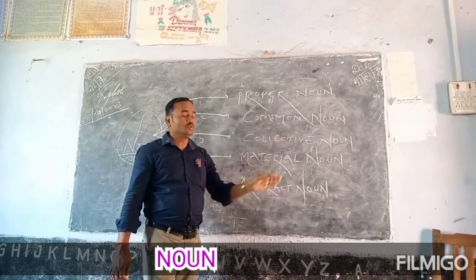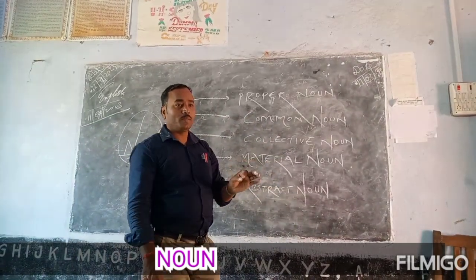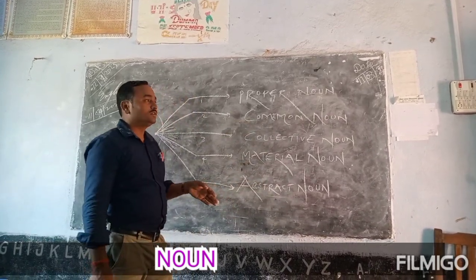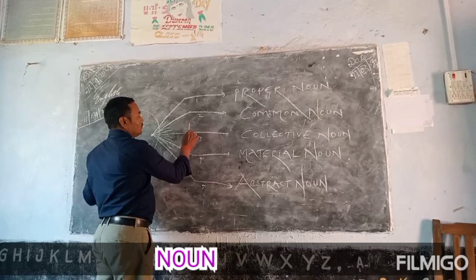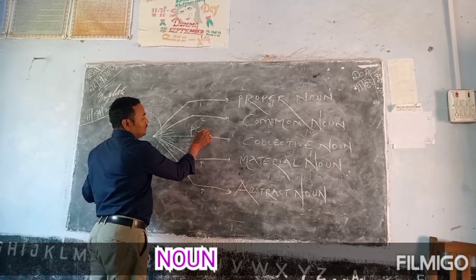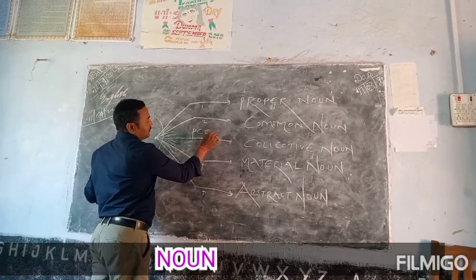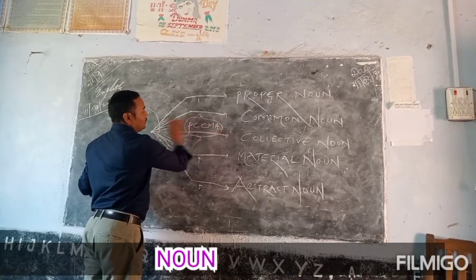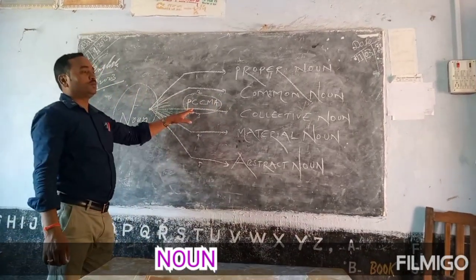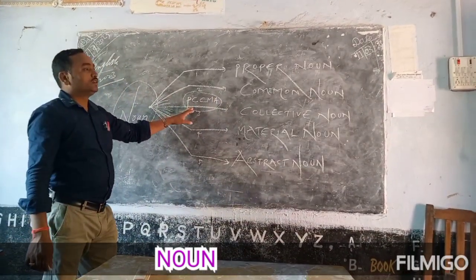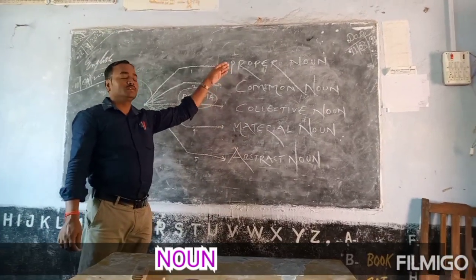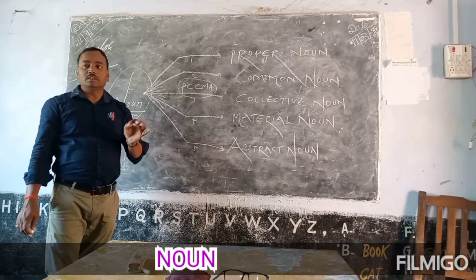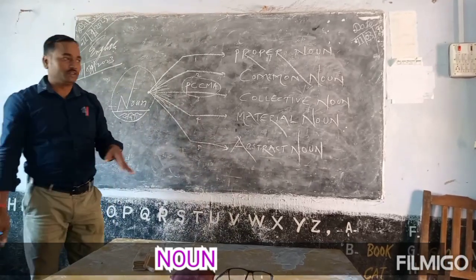At first, you should know to remember this in shorter form: P, C, C, M, N. If you know this formula, you can describe the five kinds of nouns easily.